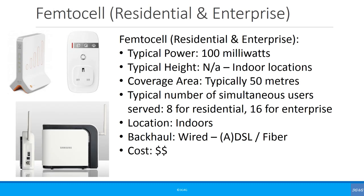Femtocells can be residential or enterprise. Typical power is around 100 milliwatts — so for LTE with MIMO, it would be 2 x 100 milliwatts or maybe 2 x 50 milliwatts. Coverage area is typically around 50 meters. Residential femtocells serve around 8 users simultaneously, enterprise around 16. They are generally always indoors with wired backhaul, and slightly more expensive than Wi-Fi access points but not too expensive.